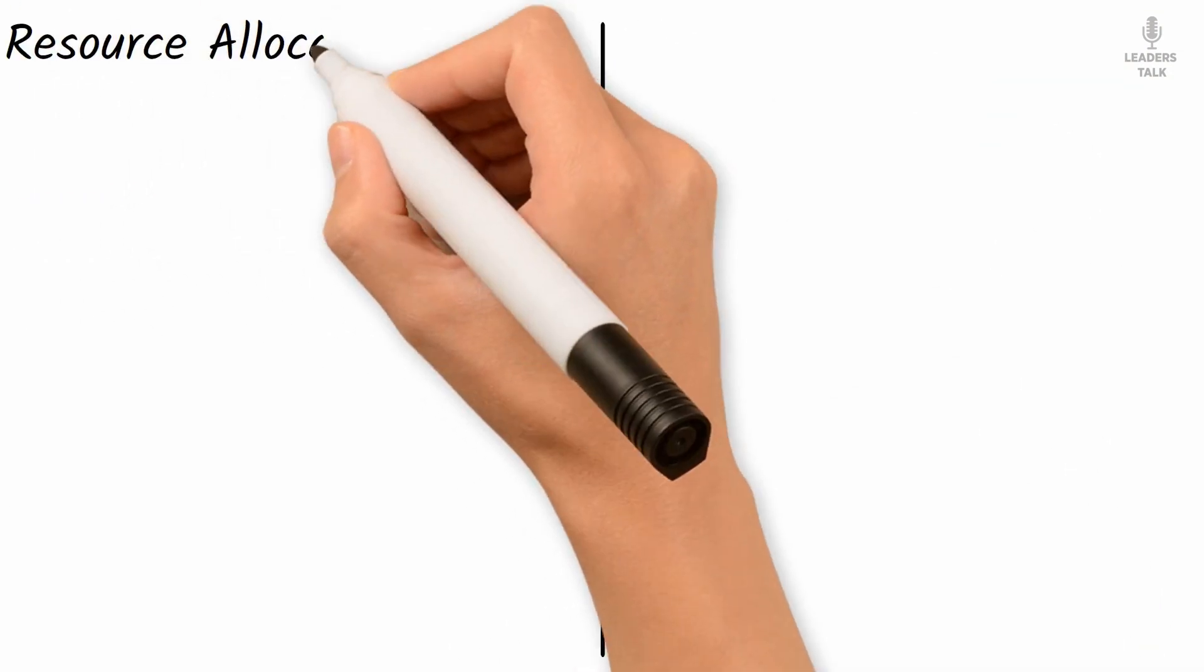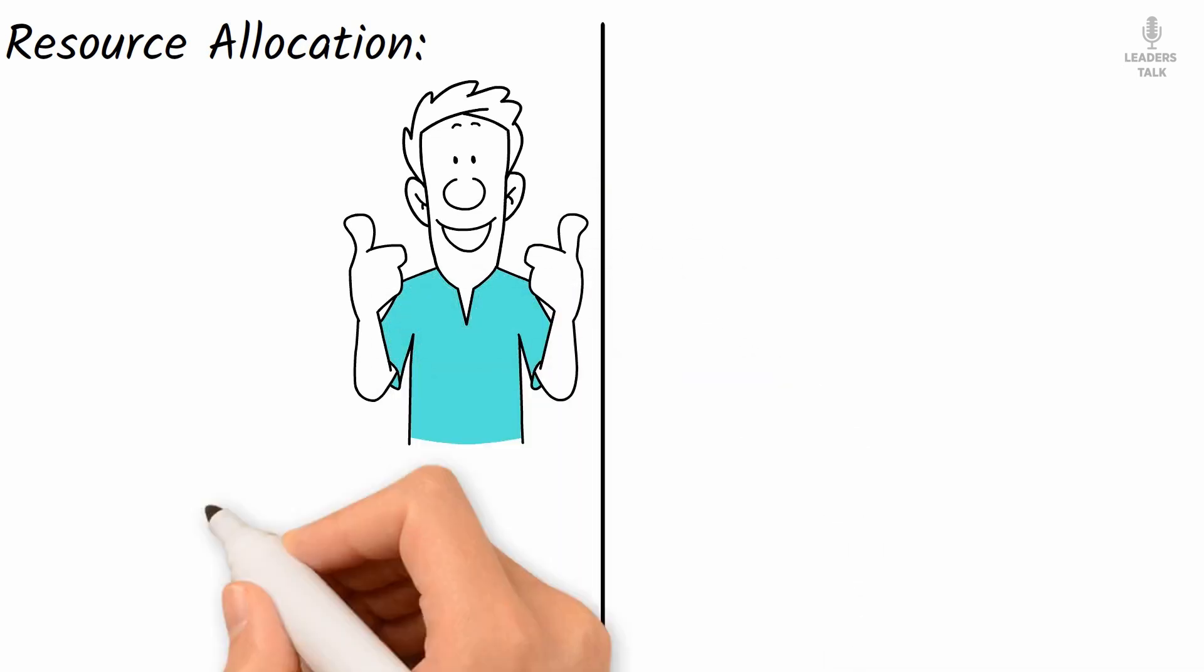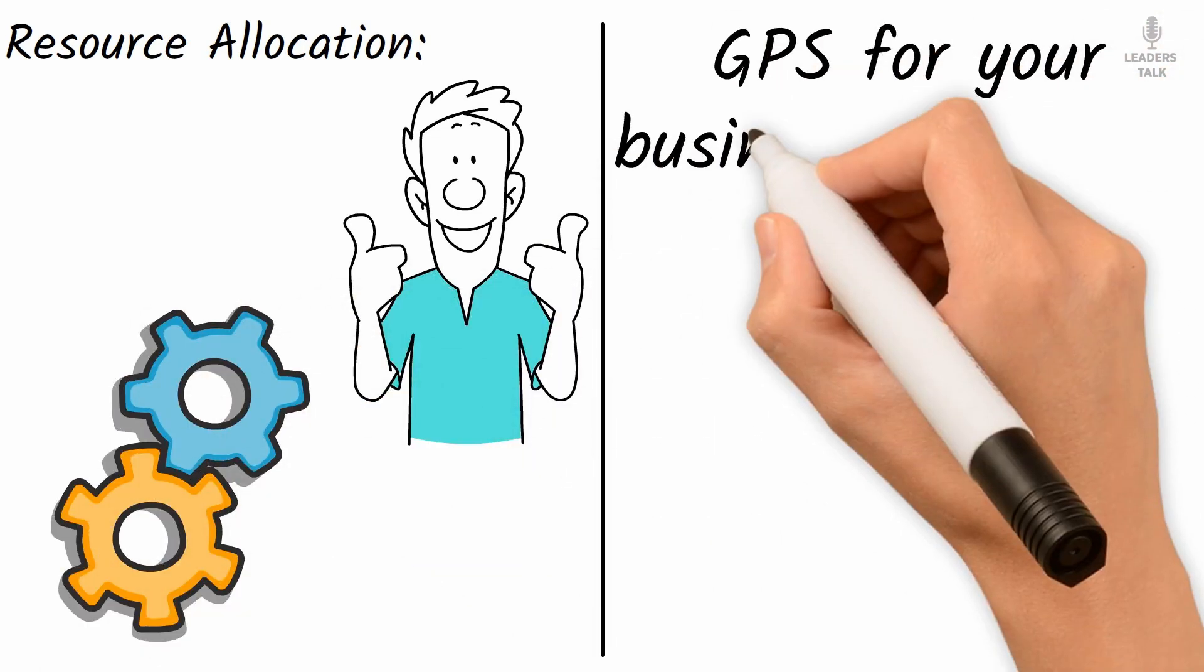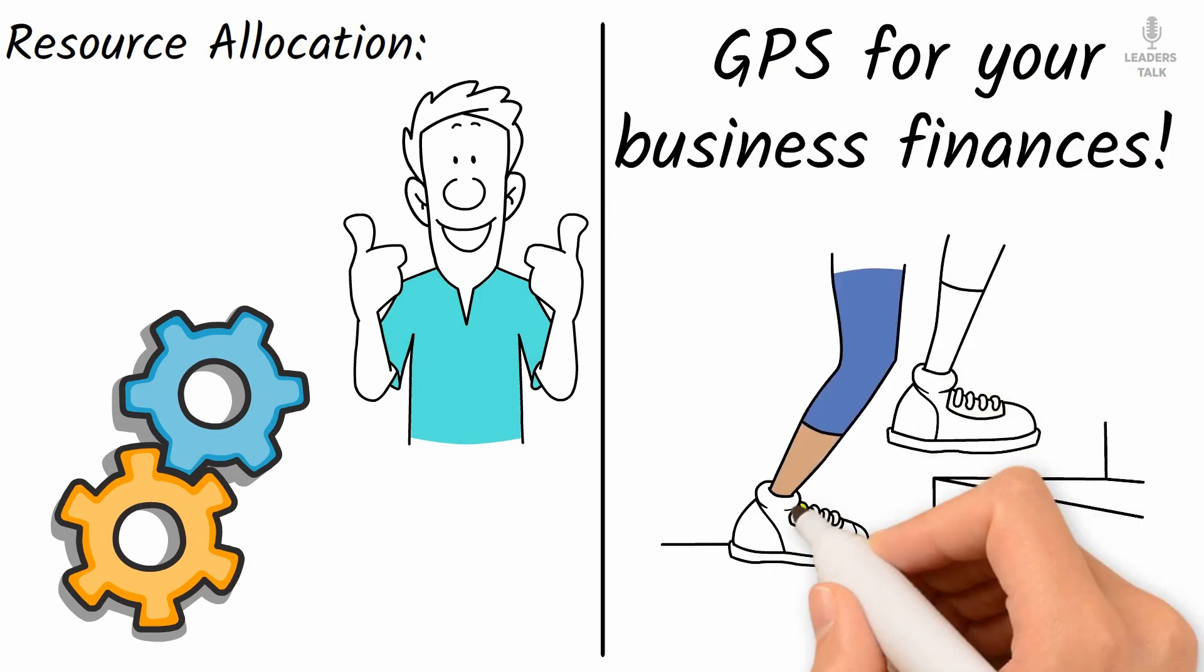Resource allocation: ensures efficient use of resources by aligning production with demand. In short, it's like the GPS for your business finances. It shows you the way.